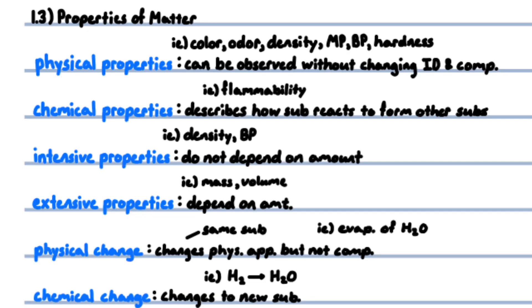A heterogeneous mixture is non-uniform, does not have same composition, properties, and appearance throughout, for example, rocks and wood. Properties of matter: physical properties can be observed without changing the identity and composition of the substance, such as color, odor, density, melting point, boiling point, and hardness.